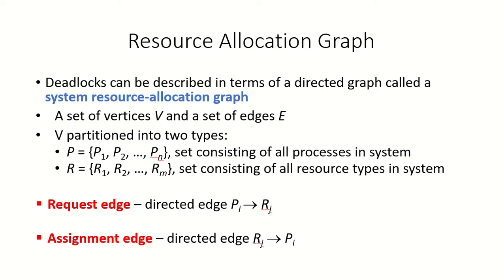A resource allocation graph is a directed graph and it can be used to describe the deadlocks in the system. This graph consists of a set of vertices V and a set of edges E, like any graph would have.